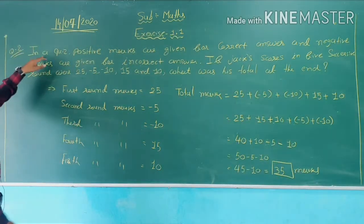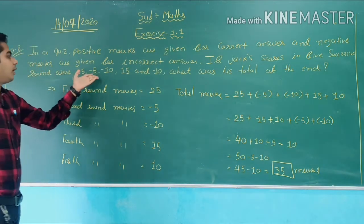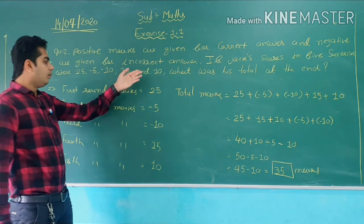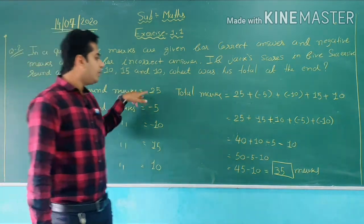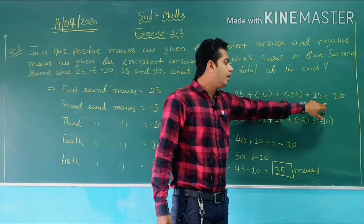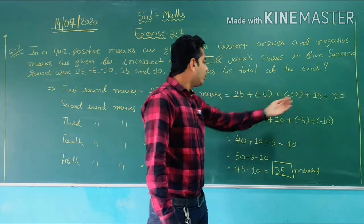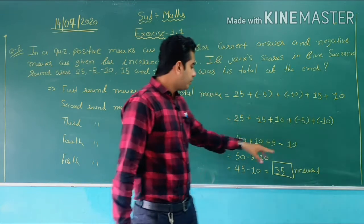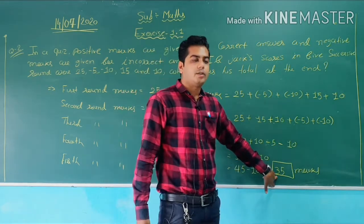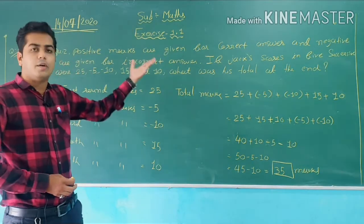Again with the question: in the quiz, positive marks are given for the correct answer, negative marks for the incorrect answer. If Jack scores across 5 rounds — 25, minus 5, minus 10, 15 and 10 — what was his total? We wrote the 5 round scores, then added all of them. We took all positive numbers on one side — total 50 — and negative numbers on the other side. Lastly, we got 35 marks. Jack scores a total of 35 marks after five rounds. If you don't understand, just playback and repeat.